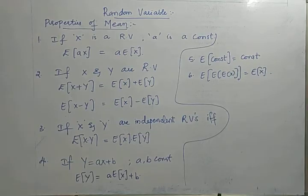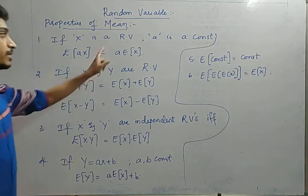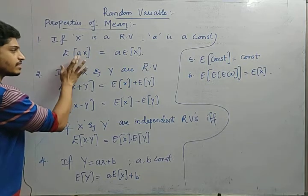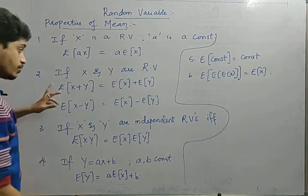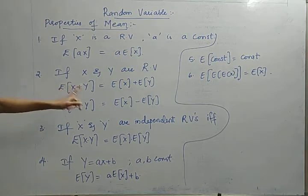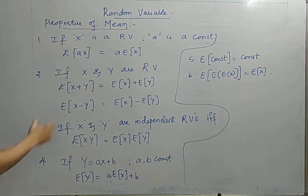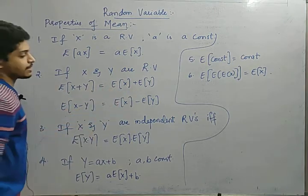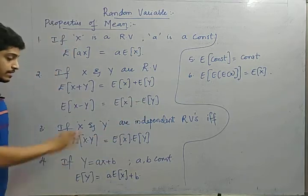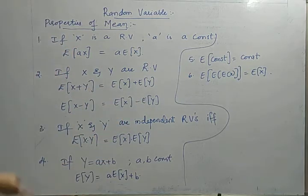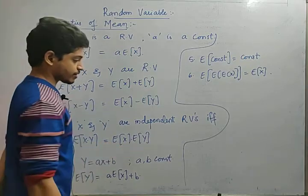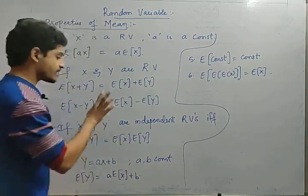Now let us see the properties of mean. If X is a random variable and a is a constant, then E(aX) = a times E(X) — the constant comes out. Next, if X and Y are random variables, then E(X+Y) = E(X) + E(Y), and E(X−Y) = E(X) − E(Y). If X and Y are independent random variables, then E(XY) = E(X) times E(Y).